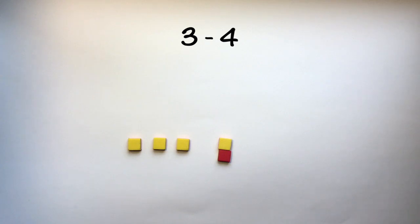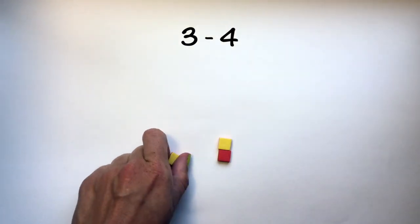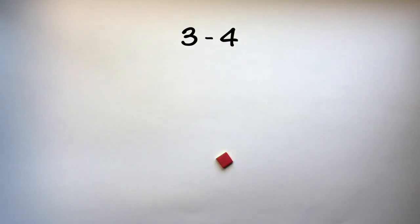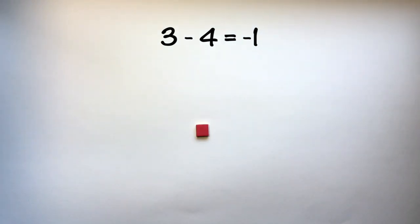But if we wanted to take positive 4 away from 3, we now are able to do so. We can remove 1, 2, 3, 4 positive tiles and we are left with negative 1.